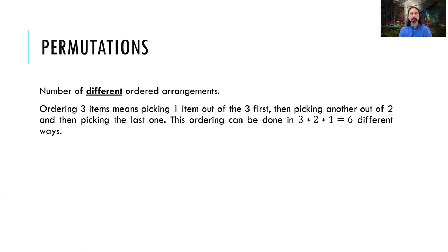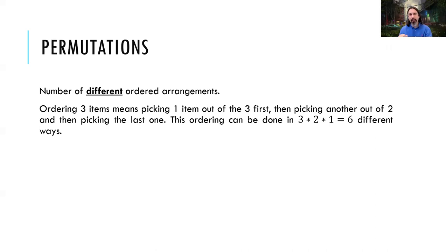With A, B, and C we have a total of six orderings. We can also think of it as sub-experiments: selecting the first item from three gives three outcomes; the second selection from two items gives two outcomes; the third from one item gives one outcome. So three times two times one equals six outcomes again.